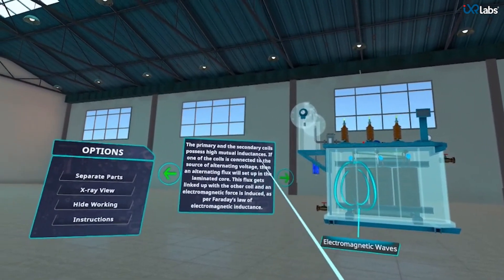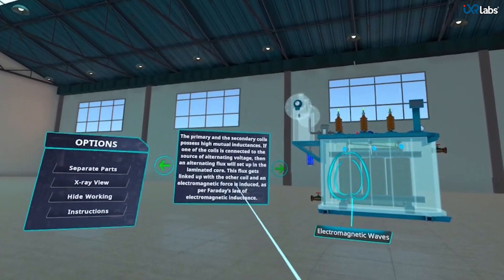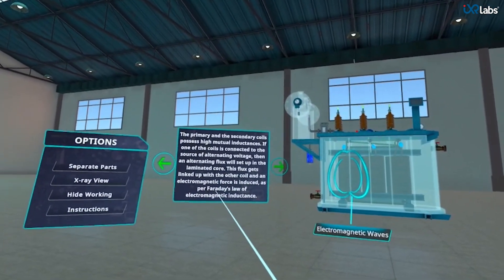The electromagnetic flux is set up in the laminated core which gets linked up with the other coil and an EMF is induced as per Faraday's law of electromagnetic induction.